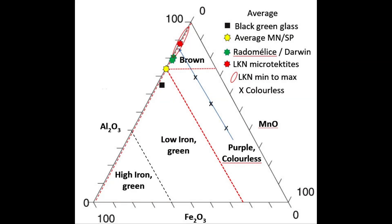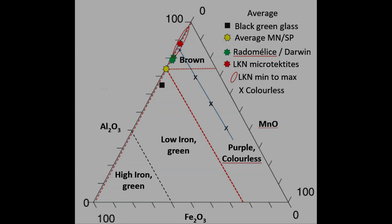Some of the trace elements in Southeast Asian tektites act as fluxes and super-fluxes that lower the melting temperature. Colorant trace elements can change the tektite's apparent color, which can explain the variation in colors between splash form, muang-nong, and microtektites, in combination with dissociation-dependent temperatures.